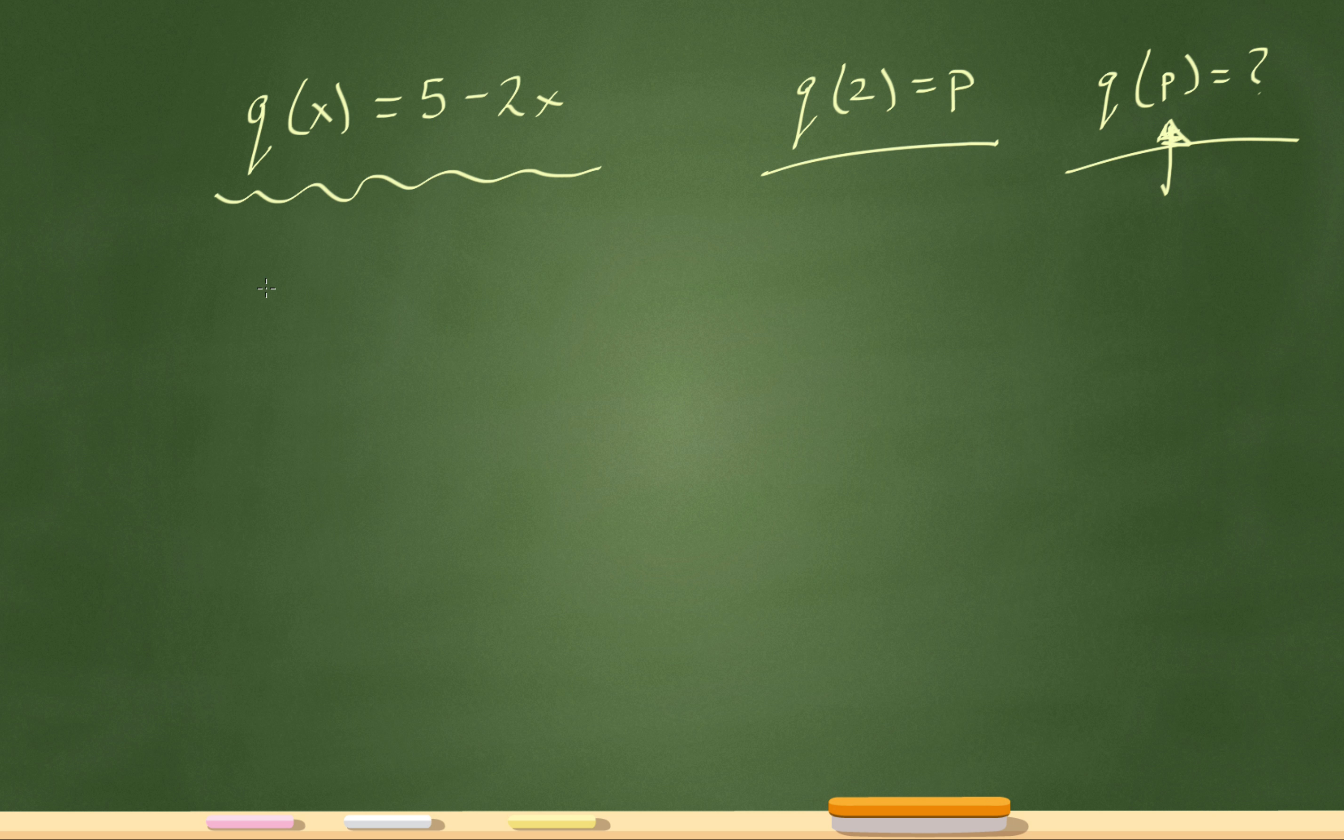So I'm going to solve for q of 2. How do I solve for q of 2? I'm just going to plug in 2 for that x right there because whatever's inside the parentheses, I plug it in for the value of x in that function. So it becomes 5 minus 2 times 2. 2 times 2 is 4. 5 minus 4 is 1. So I know that q of 2 equals 1.